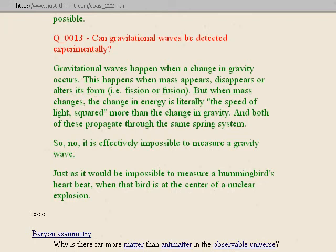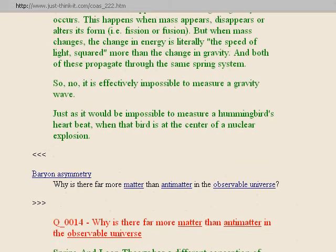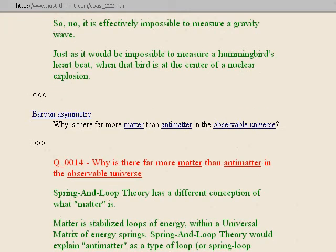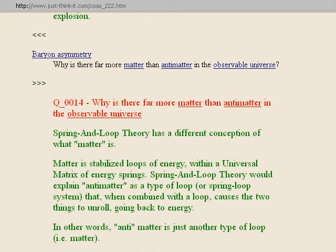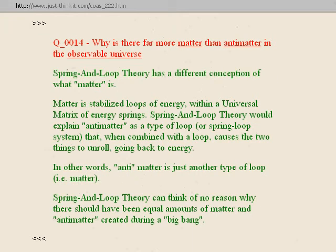Next section: baryon asymmetry. Question fourteen: why is there far more matter than antimatter in the observable universe? Spring-in-Loop Theory has a different conception of what matter is. Matter is stabilized loops of energy within a universal matrix of energy springs. Antimatter is a type of loop or spring-loop system that, when combined with a loop, causes the two things to unroll — to go back to energy. In other words, antimatter is just another type of loop or matter. Spring-in-Loop Theory can think of no reason why there should have been equal amounts of matter and antimatter created during a big bang. This is just not a problem.